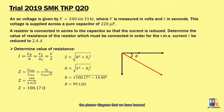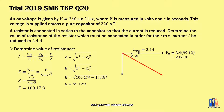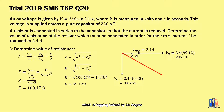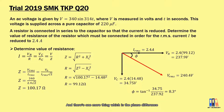Now we draw the complete phasor diagram. The RMS current is 2.4 amperes to the right. The voltage across the resistor is calculated by IR = 237.9 volts and is in phase with the current. The voltage across the capacitor is lagging behind by 90 degrees, with an RMS value of 34.75 volts. The applied voltage is 240.4 volts. Note that all values here are RMS; you can obtain the peak values by multiplying by √2. The phase difference shows that the current is leading the voltage by an angle of 8.3 degrees.